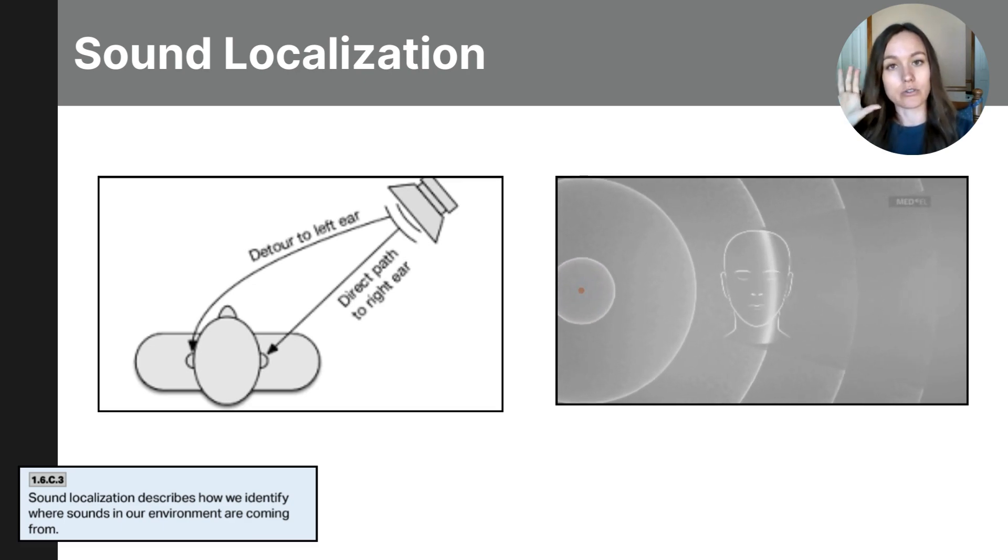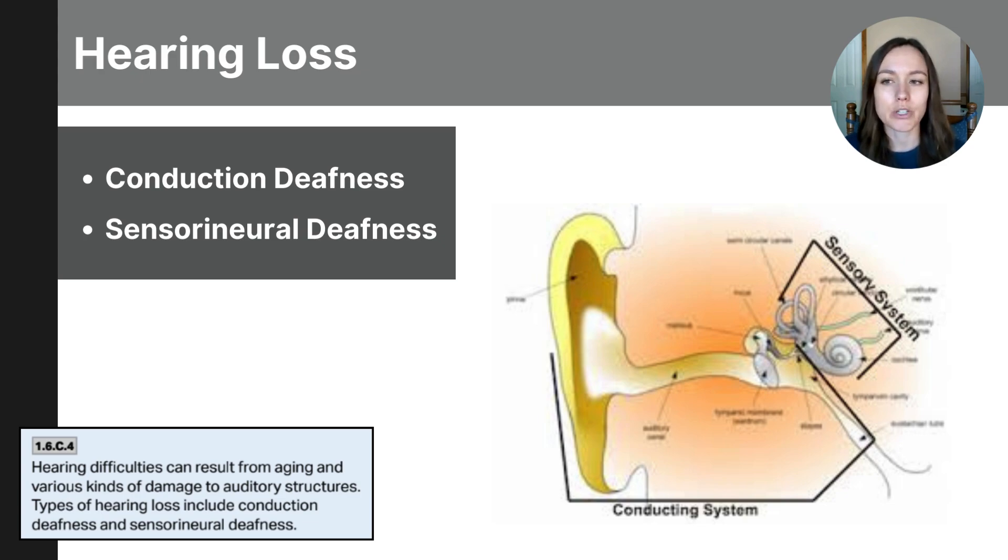Your outer ear, as you learned, is the pinna, has a unique shape, and it changes the sound slightly depending on where it's coming from: above, below, in front, and behind. Your brain uses these changes to understand the sound's position. So the important takeaway here is that your brain uses multiple cues to determine the location of sound, and the two main factors are relying on the time difference from ear to ear and the loudness difference from ear to ear.